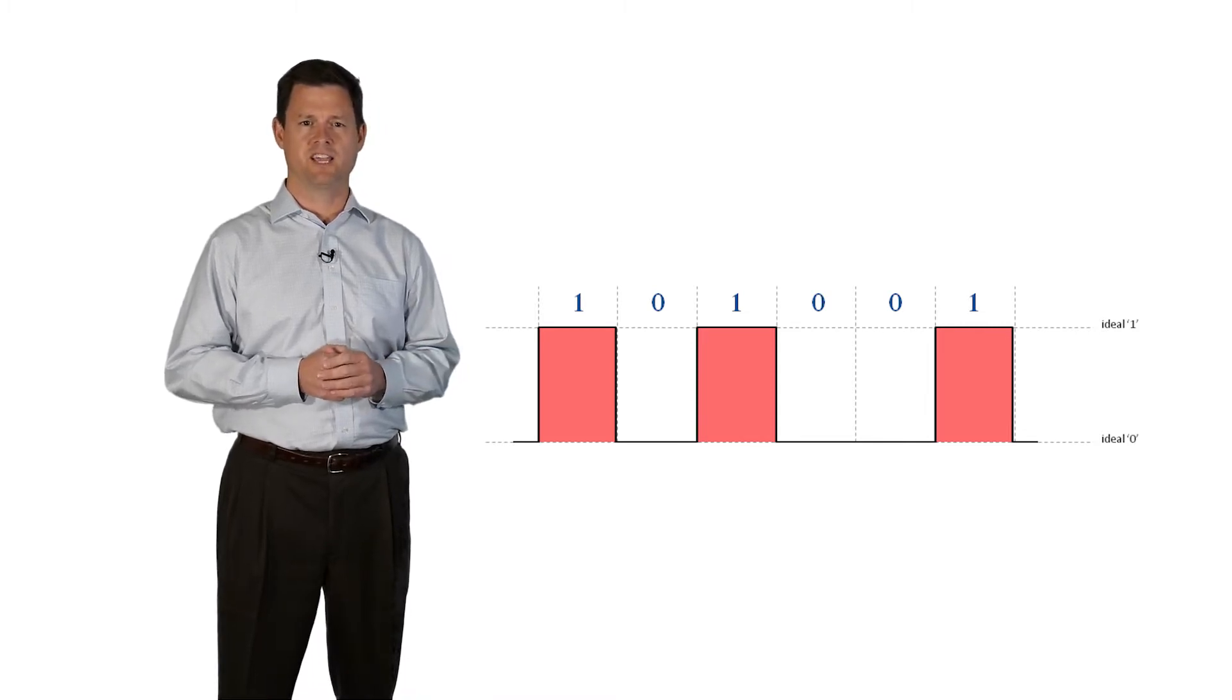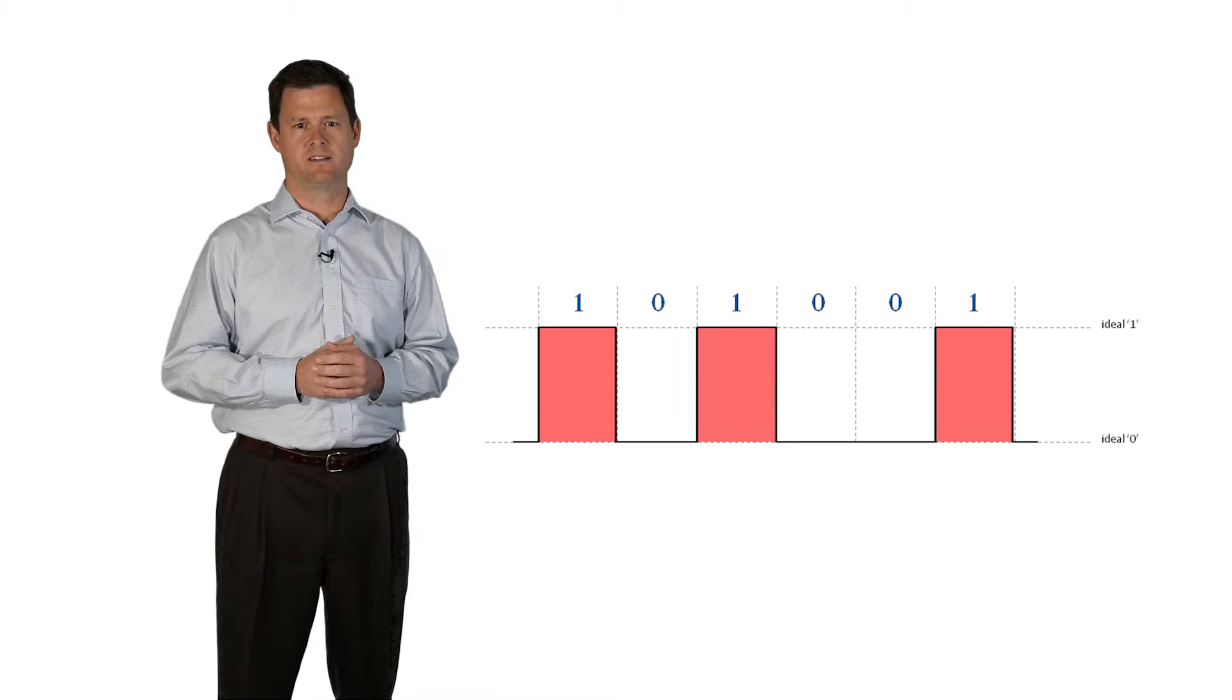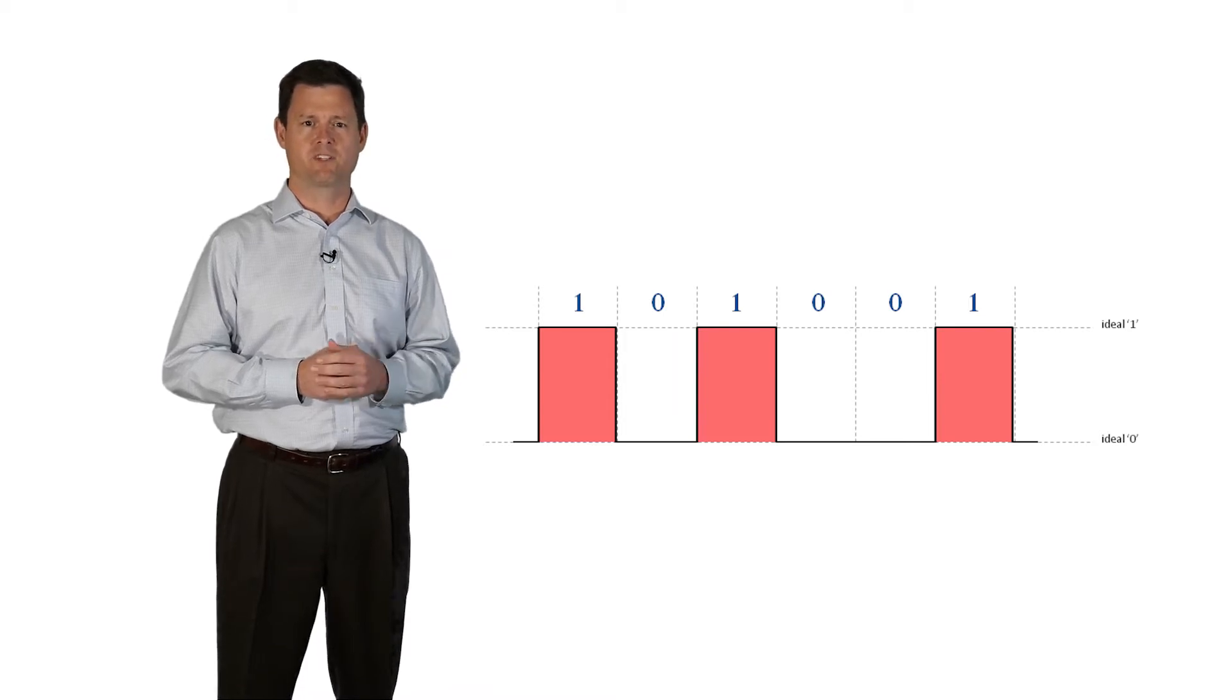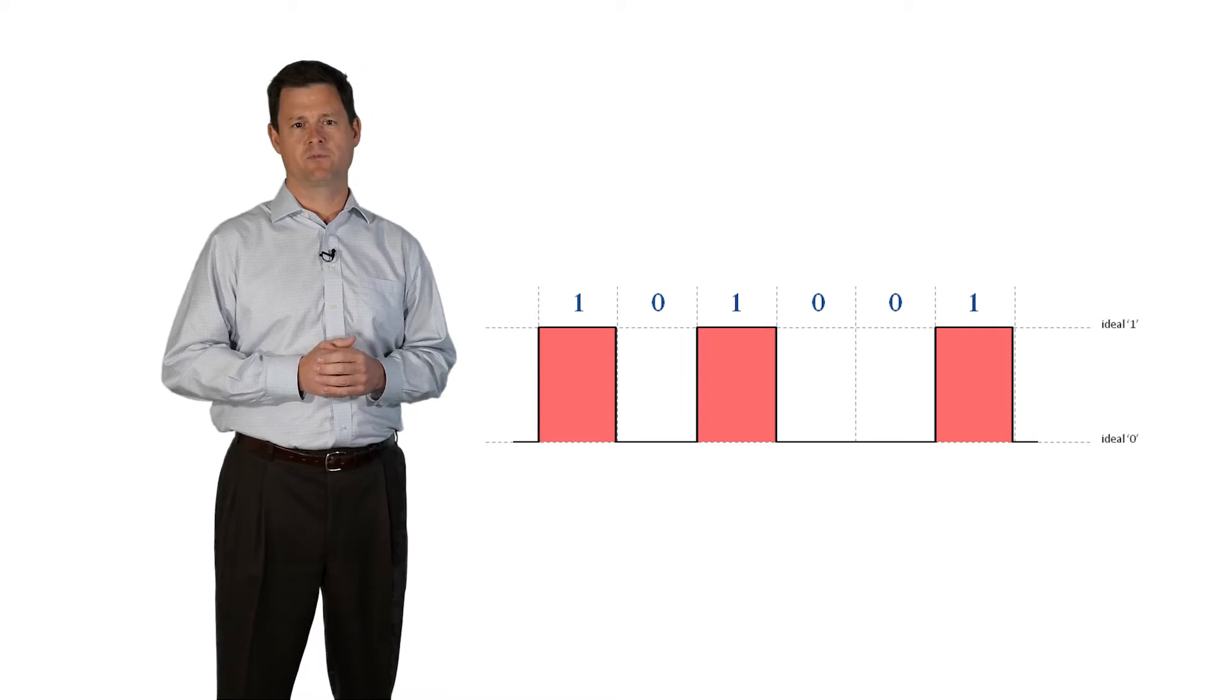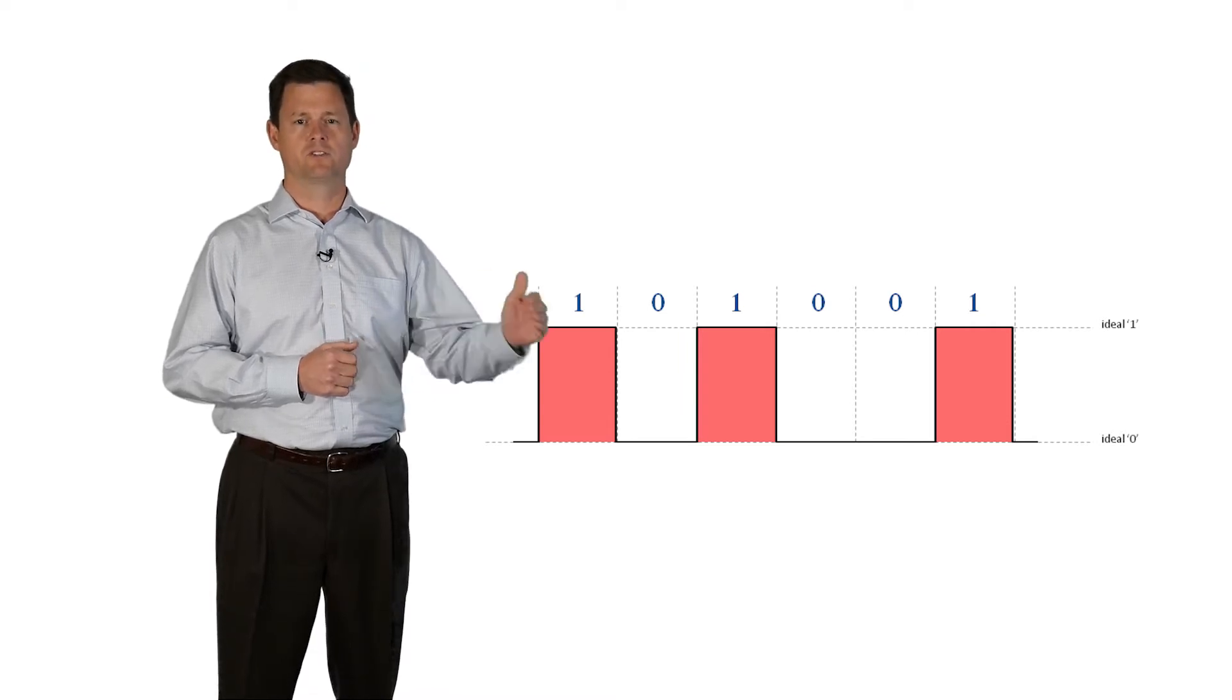Each change in power state is called a symbol, and we can gather a single piece of information, a one or a zero, from each change of state. We say that this type of transmission provides one bit per symbol. This is how information was passed from one point of the network to another.